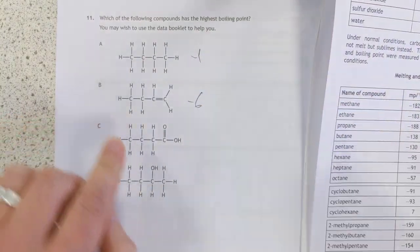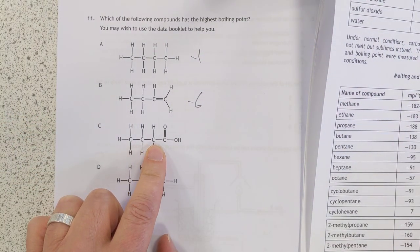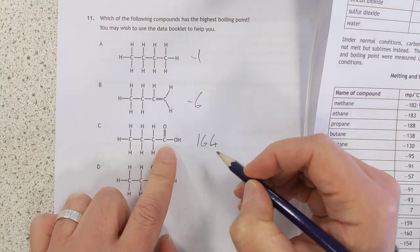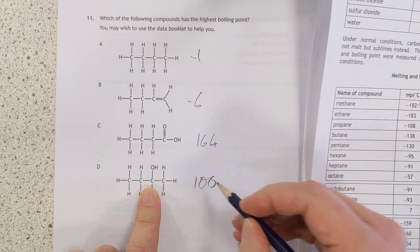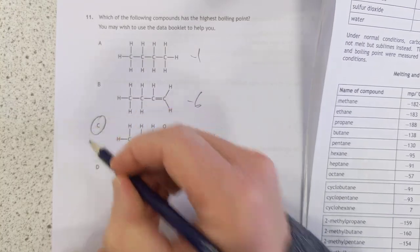This is butanoic acid. My least favorite chemical in the whole world. It boils at 164. I suspect that will be the right answer. But let's just check this. This is butan-2-ol. Boils at 100 Celsius. Highest. Yes, it is. So that's the answer.